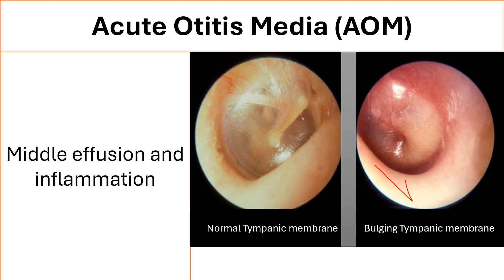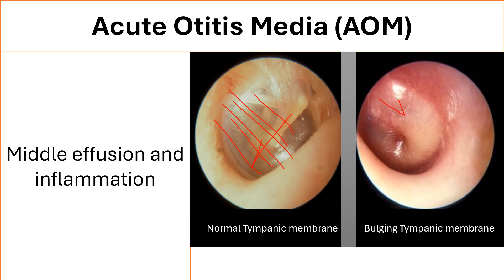In cases of acute otitis media, the tympanic membrane will be full of pus and bulging towards the outside. You will not see the handle of malleus anymore, and there will be an absence of cone of light. The tympanic membrane will also be erythematous. Erythema by itself does not mean acute otitis media except if it is associated with severe pain.